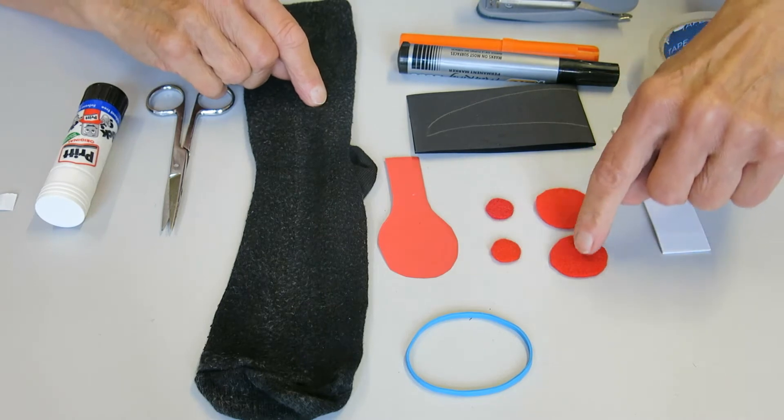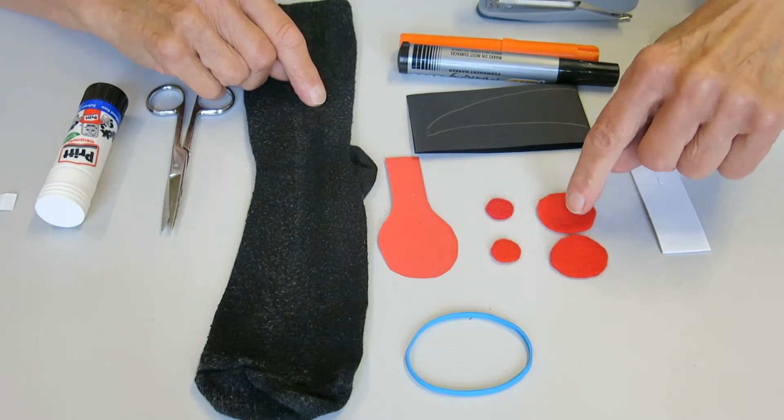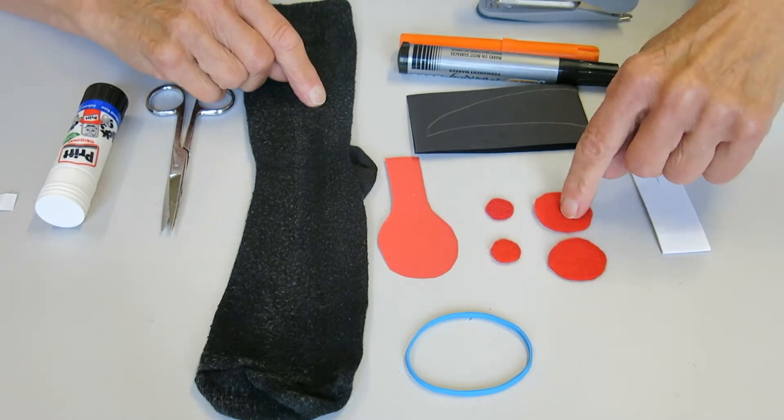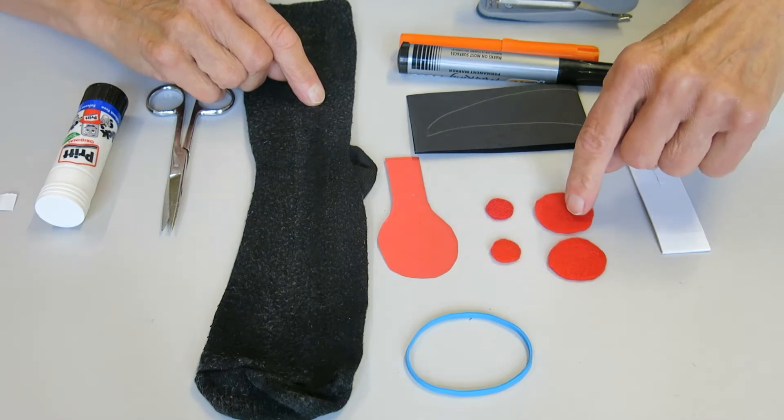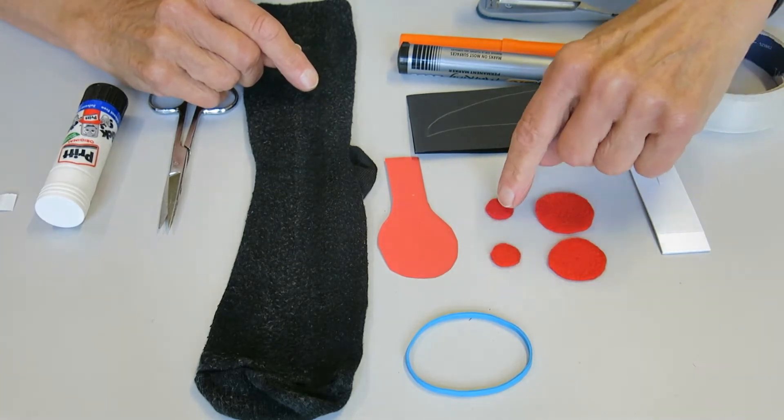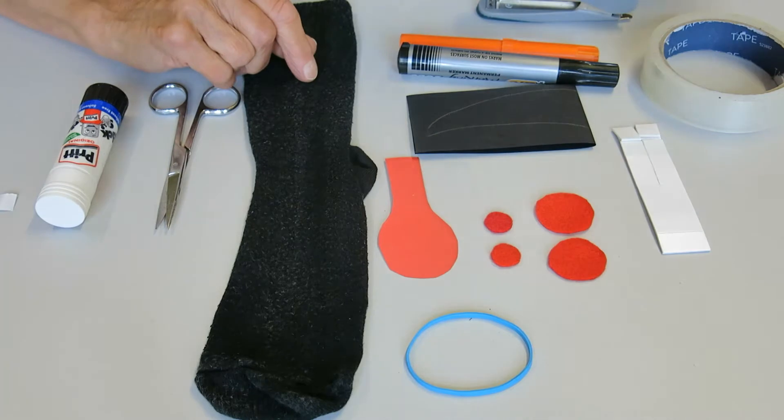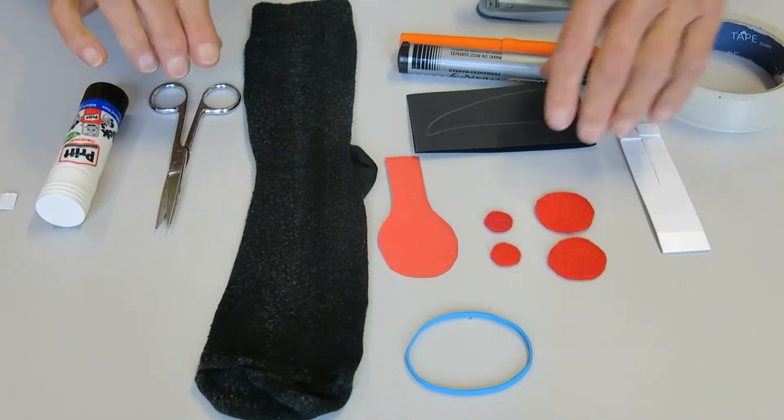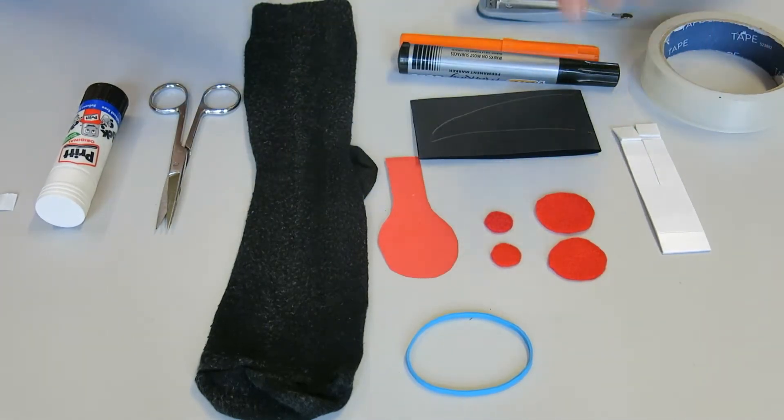You need two red eyes. These ones are circles made out of felt that you can use, or cardboard, and two smaller ones that make his nose. You're going to need something to make his ears as well.